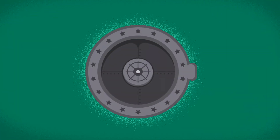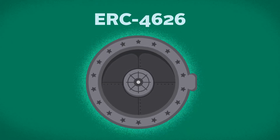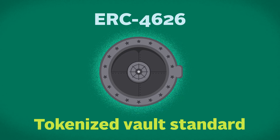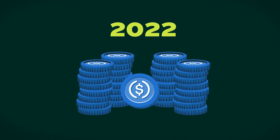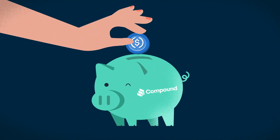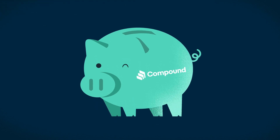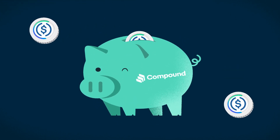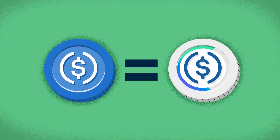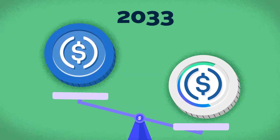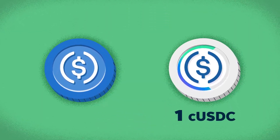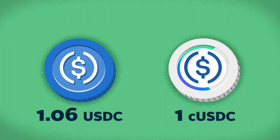Now on to the last token standard for today: ERC4626, aka the tokenized vault standard. This standard was put together for yield-bearing tokens, which are designed to self-generate interest over time. If Kimberly deposits her USDC to the Compound Lending Protocol, she will receive corresponding CUSDC tokens. At first, Kimberly's USDC token will be equal to one CUSDC token, but over time, the value of CUSDC may rise on its own as it accrues yield — for example, one CUSDC may be equal to 1.06 USDC in a few years.